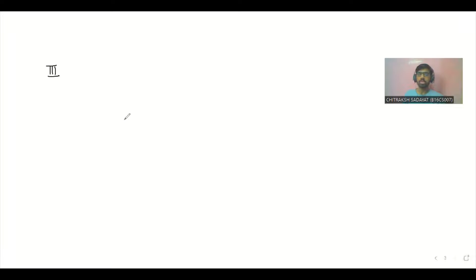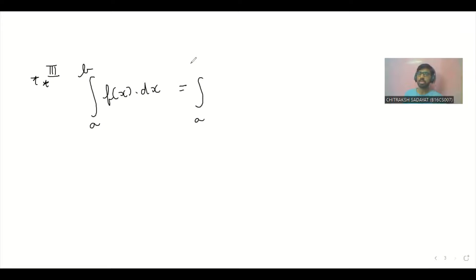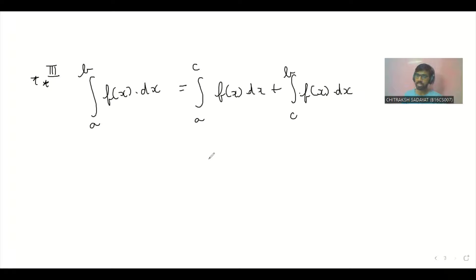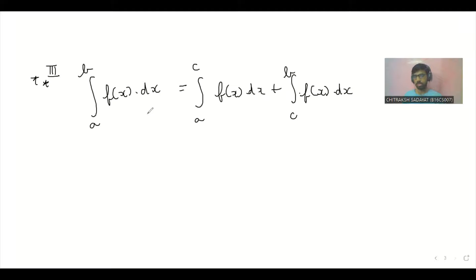Third property: maan lo aapke paas integration hai A se lekar B f(x) ka — yeh bahut important property hai aur hum ek poora alag lecture iss par rakhne wale hain. Aap limits ko parts mein bhi kar sakte ho: A se C, C se D, D se B. Yeh splitting tab ki jaati hai jab f(x) kahin apni definition change kare — jaise greatest integer function, fractional part, ya mod function. Jahaan bhi function break ho ya sign badle, wahaan limits split kar do.